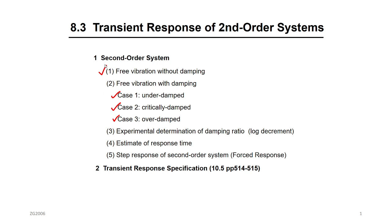Before, we talked about how to draw the transient response. If you know the model of your second order system — if you know the equation of motion or the transfer function — you know how to draw the transient response. It depends on zeta: how much zeta do we have? There will be several cases — three cases if you have zeta, or one case only if you have no zeta.